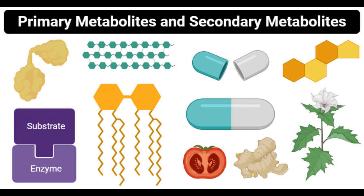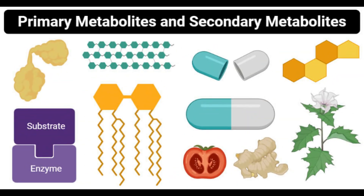Secondary metabolites are the organic compounds that are produced by various organisms that are not directly involved in the growth, development, or reproduction of the organism but are essential in ecological and other activities. Secondary metabolites are also termed specialized metabolites or natural products. Because they are not involved in growth and development, the absence of these compounds causes little to no effect on the survivability of the organism.